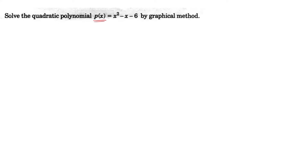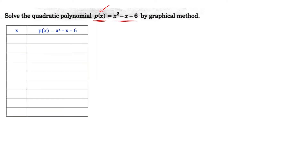Solve the quadratic polynomial P(x) = x² - x - 6 by the graphical method. To solve a quadratic polynomial using the graphical method, we first find different values of x and calculate the corresponding value of the polynomial P(x).